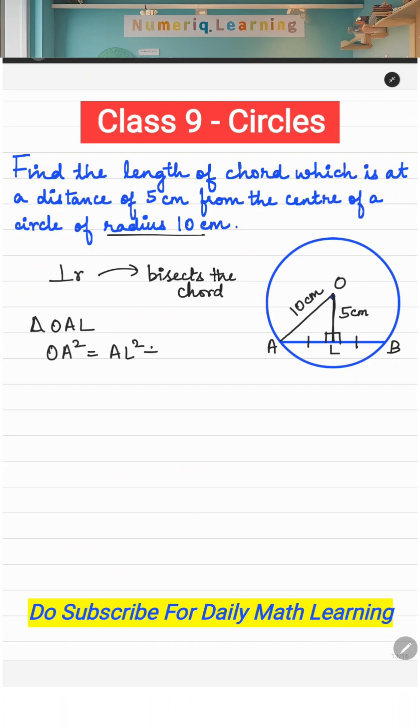Just substitute. What is OA? It is the hypotenuse, so 10² equals AL, which is the unknown, plus OL is the perpendicular distance, which is 5².